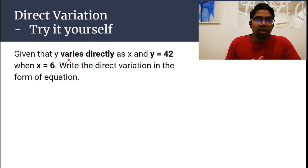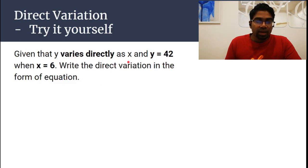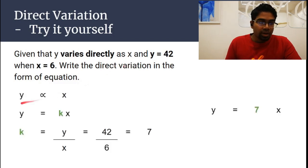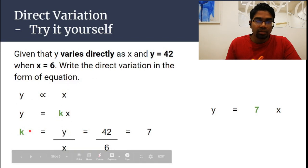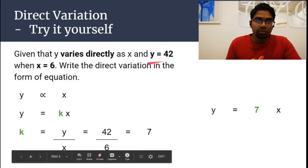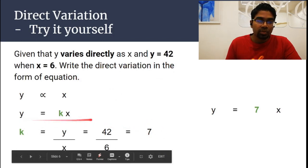Pause the video and try the next question yourself. Again, y varies directly as x, so we write the equation y equals kx. Rearranging to find k gives y over x, which is 42 over 6, giving us 7. Substituting k back into the equation, we get y equals 7x.